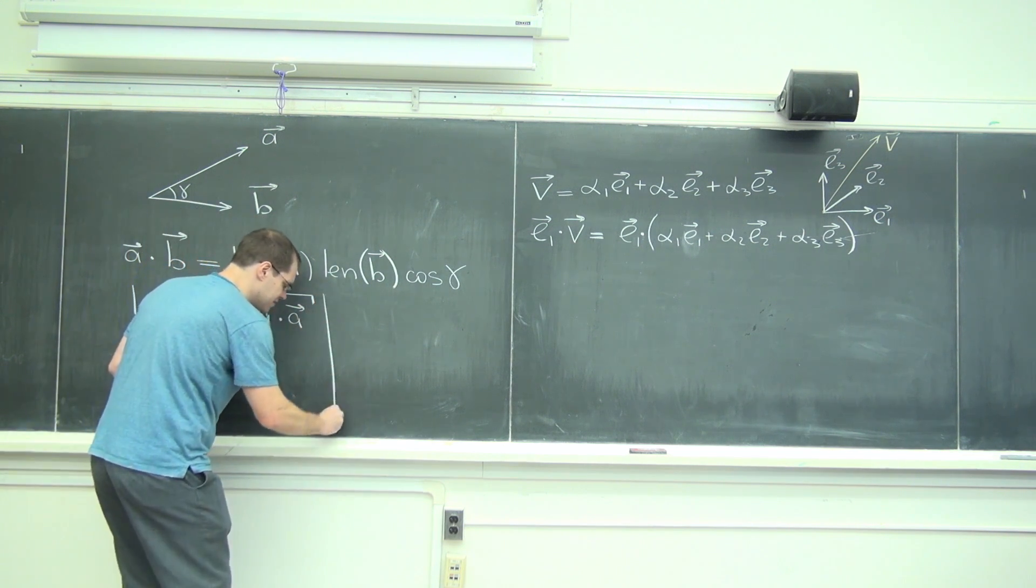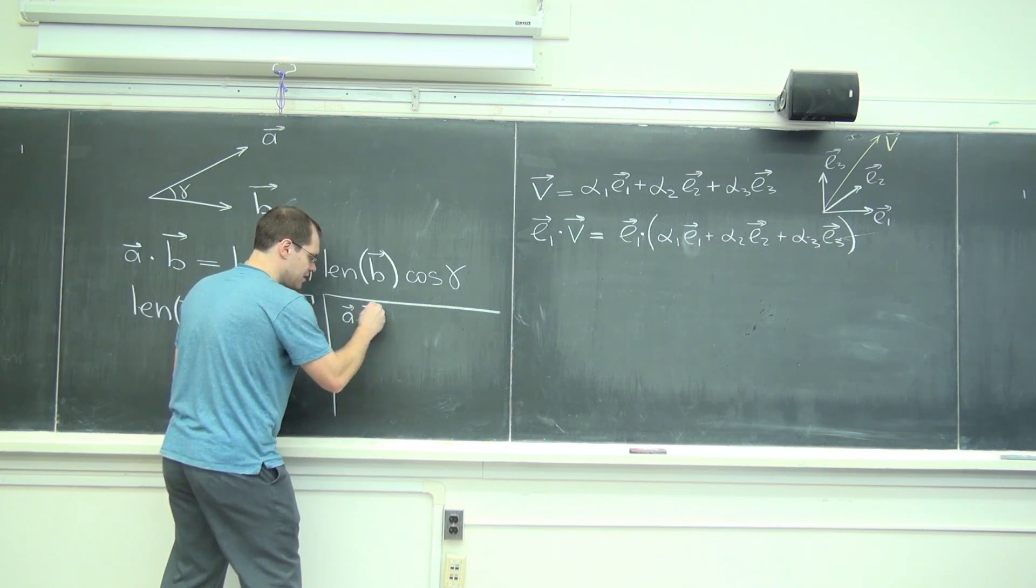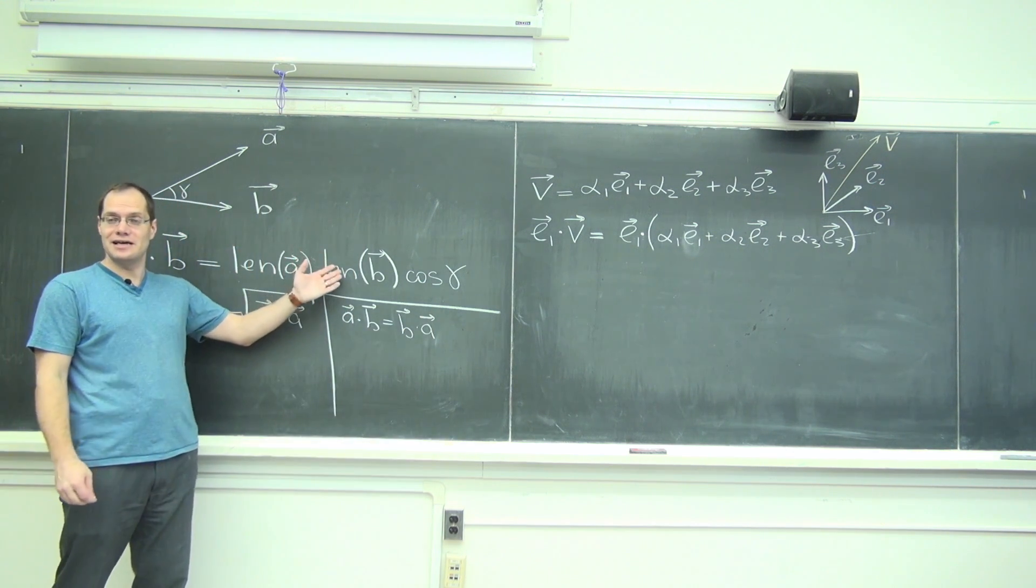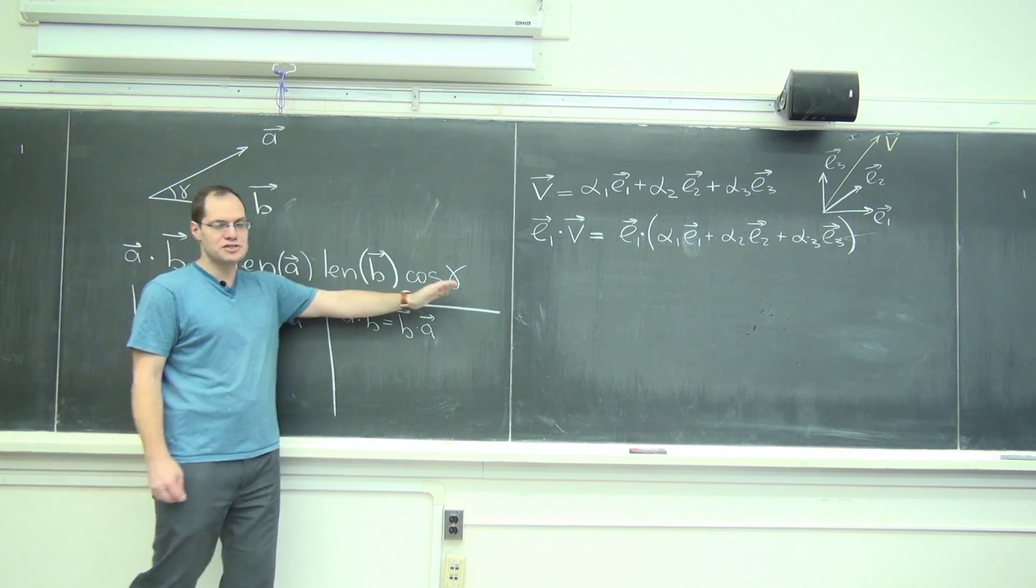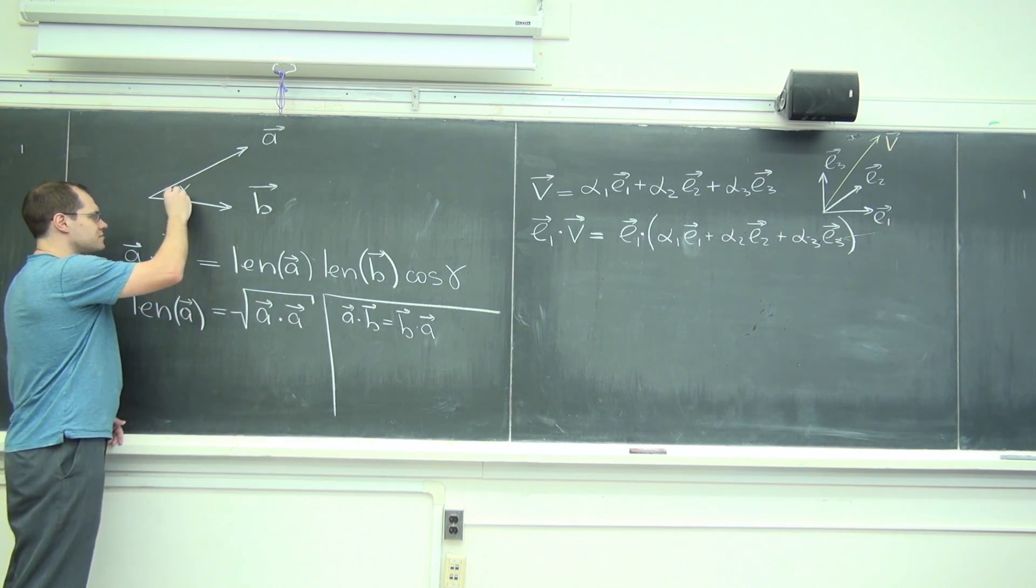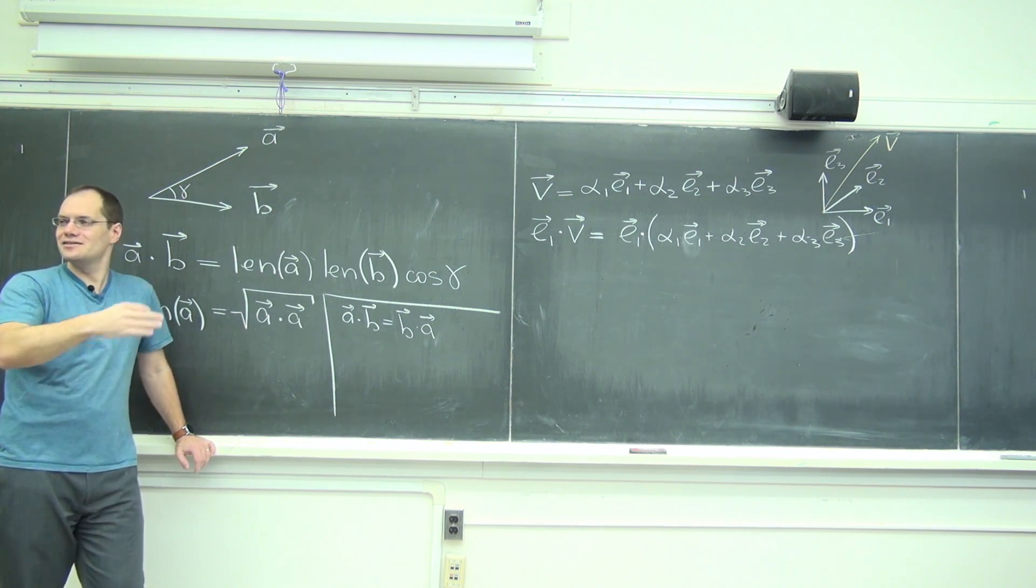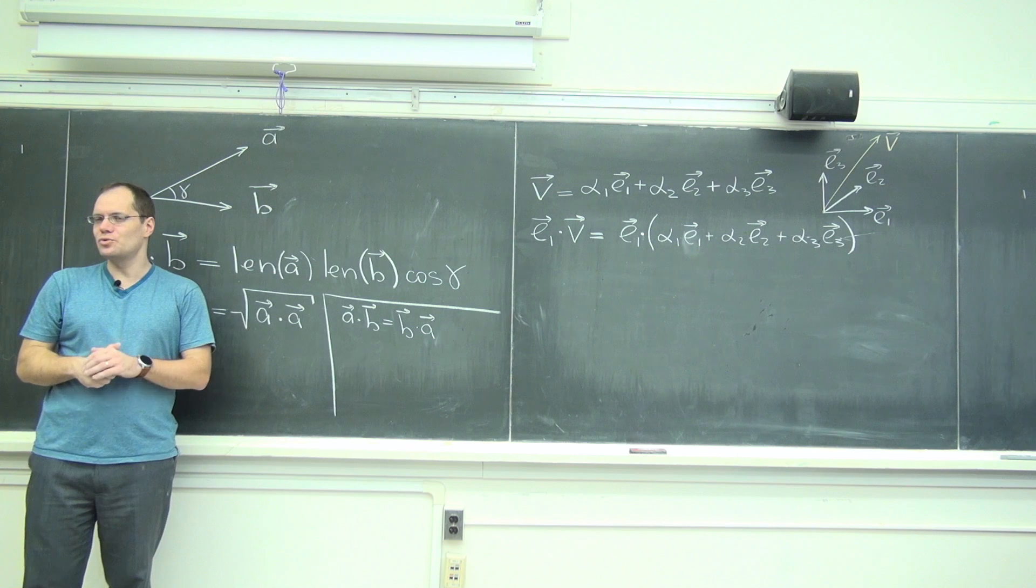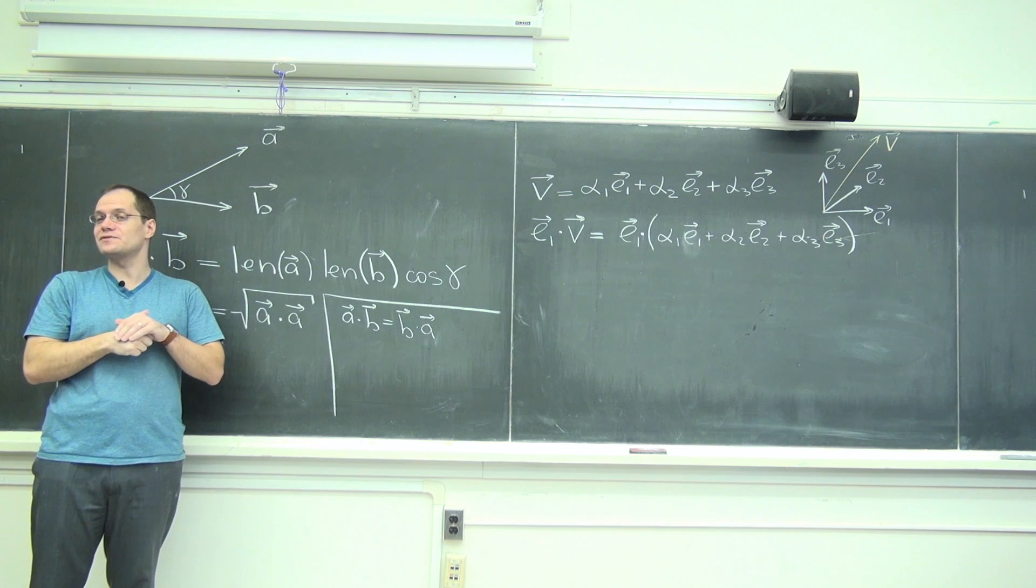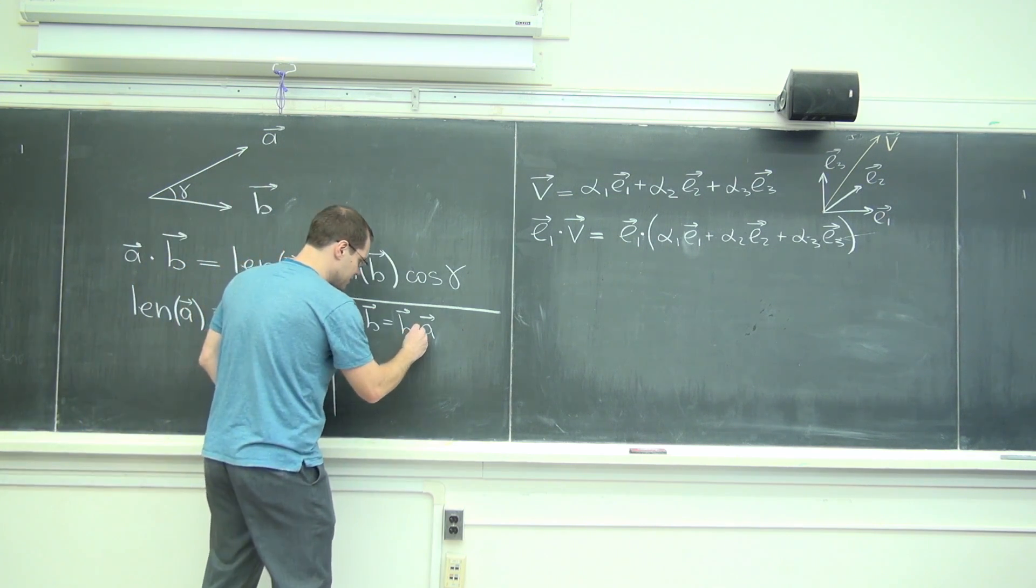A dot B equals B dot A. Yeah, of course it's true, because if we did B dot A, it would be the length of B times the length of A times the cosine of the angle between them. And cosine is this nice function that even if we said that the angle between A and B is minus the angle between B and A, the cosine kills that minus. It's an even function. So yes, it's commutative. Very good. We have commutativity.